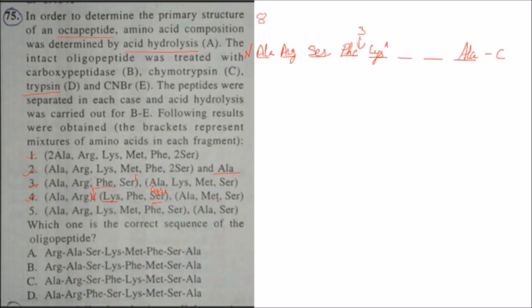What remains now is alanine, methionine, and serine. Alanine is already placed at the C-terminal. Methionine could be in one of two positions — we don't know the exact sequence yet. So we move to the last treatment, which is cyanogen bromide. The cutting site of cyanogen bromide is after methionine — it will cut after methionine. So methionine should be present at a specific position.